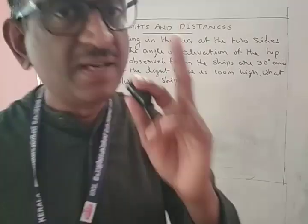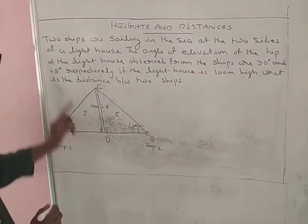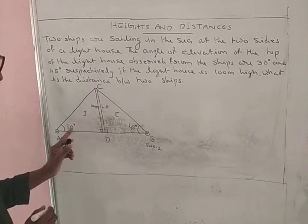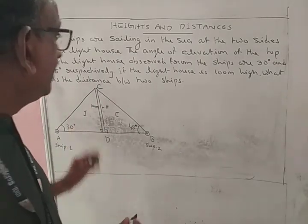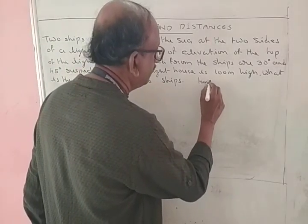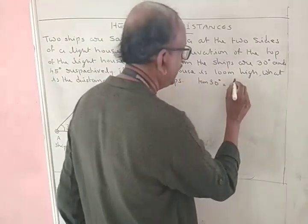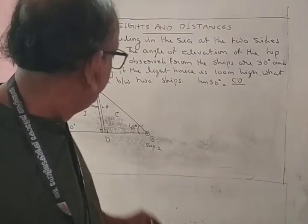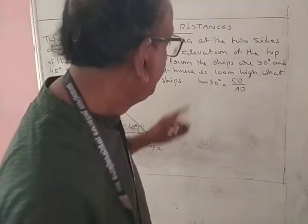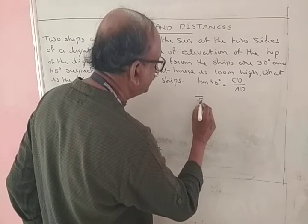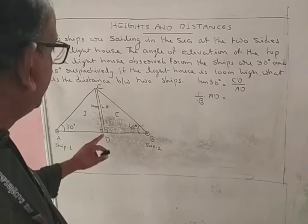Consider the first right triangle. CD in this triangle is opposite to 30 degrees and AD is adjacent to the 30-degree angle. Tan 30 is equal to the opposite side CD divided by AD.